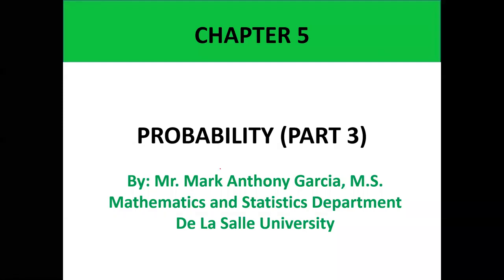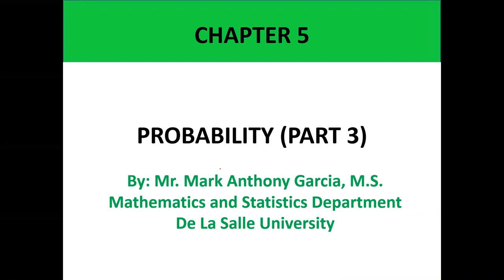In the last video, we presented and discussed the two formulas in probability: the additive rule and the complementary rule. Now in this video, we shall discuss the next three formulas of probability, which are the conditional probability and the multiplicative rules for dependent events and for independent events.